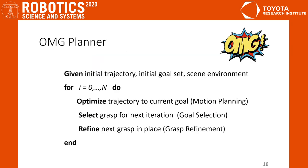We show the algorithm OMG planner at a high level, which runs these three optimization steps for motion planning, goal selection, and grasp refinement.